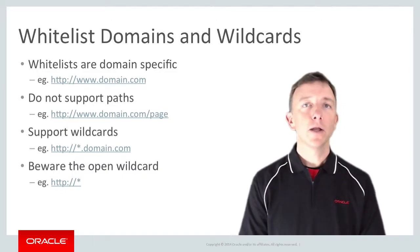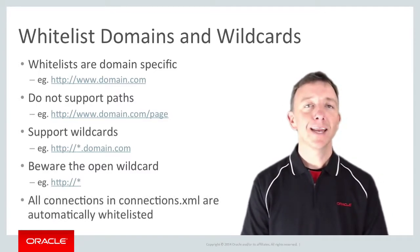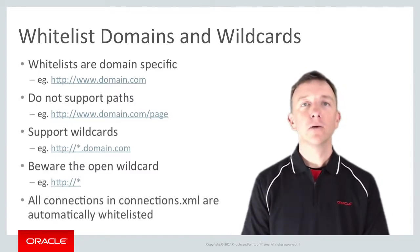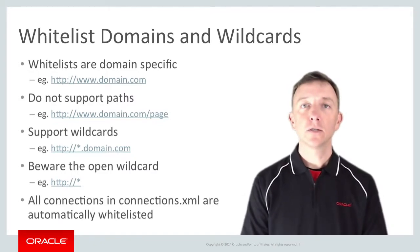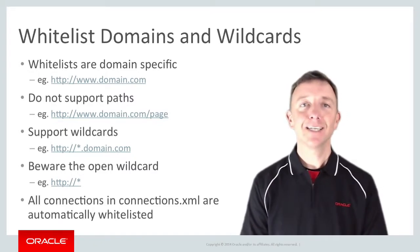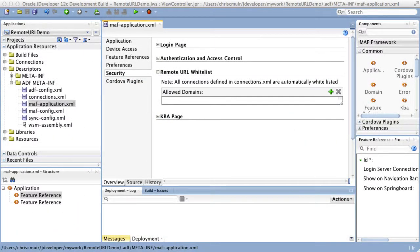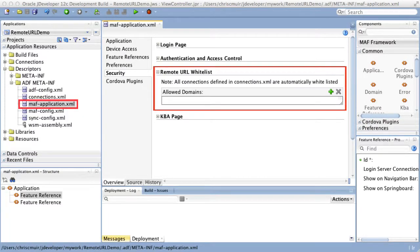It's worth noting that in your MAF application, any connections you define in the connections.xml file — including remote URLs, web service connections, and so on — are implicitly added to the whitelist at runtime. In this screenshot in the maf-application.xml file, under the security node, you can see the Remote URL whitelist option where you explicitly define the URLs.